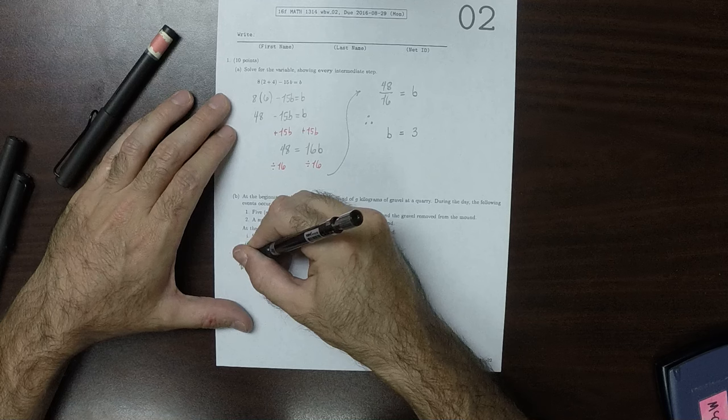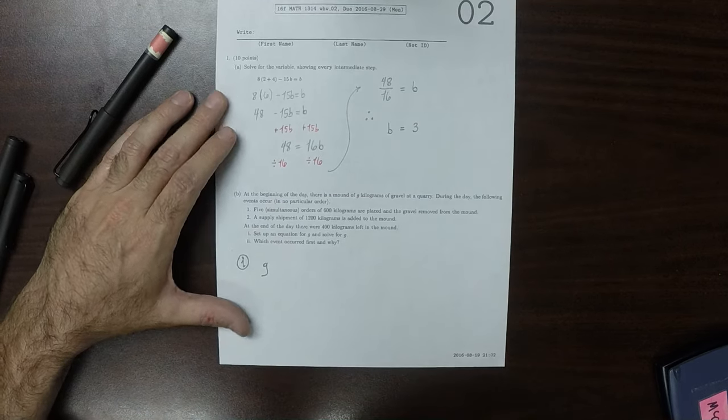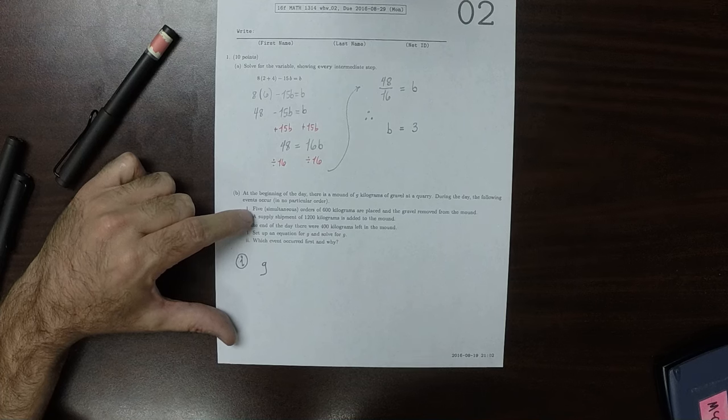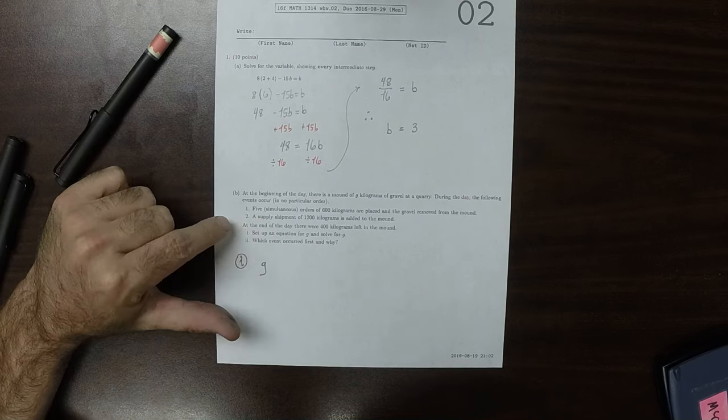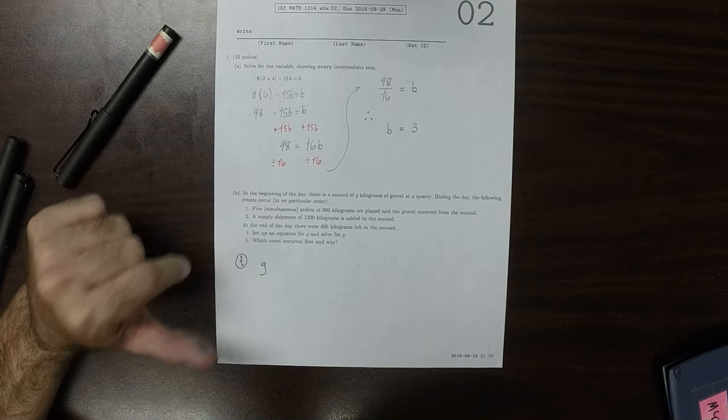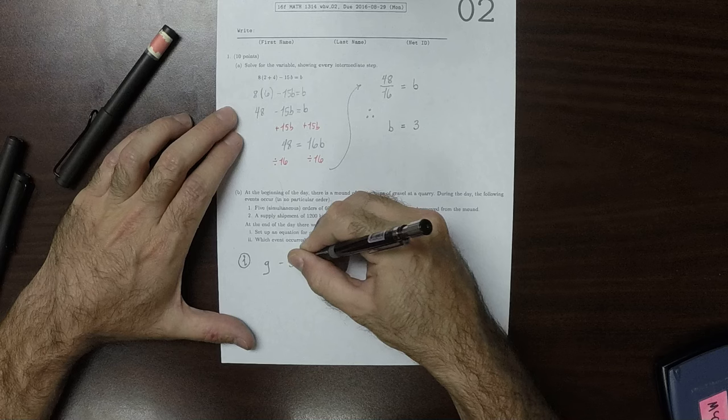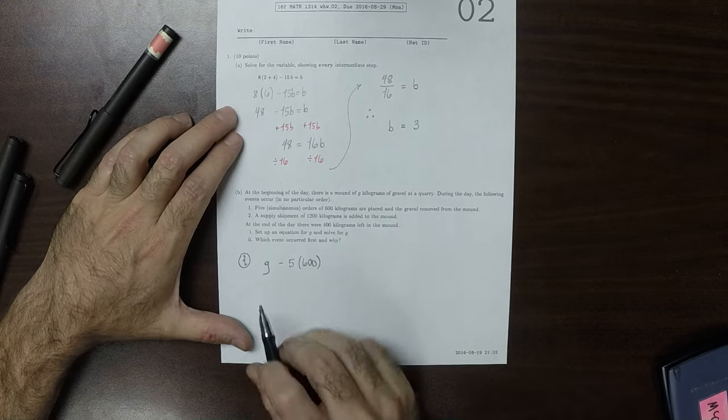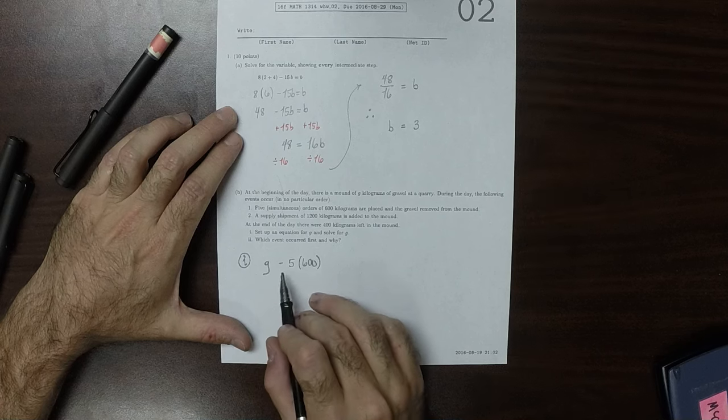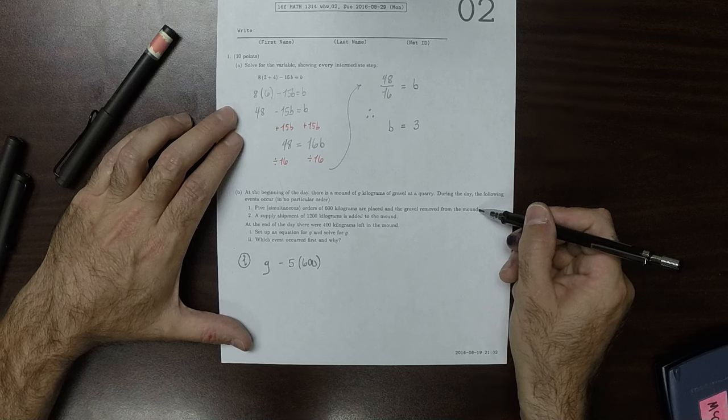To solve part 1, we have G, and then 5 simultaneous orders of 600 kilograms are placed and the gravel is removed. So this would be minus 5 times 600. So the initial amount minus 5 times 600, that's the result of event one.